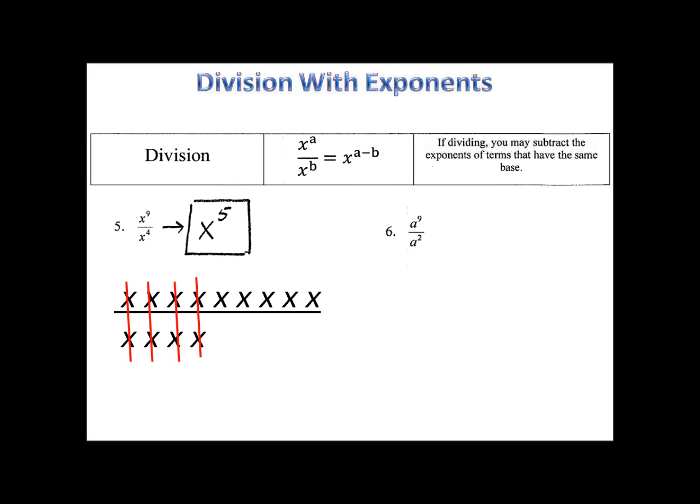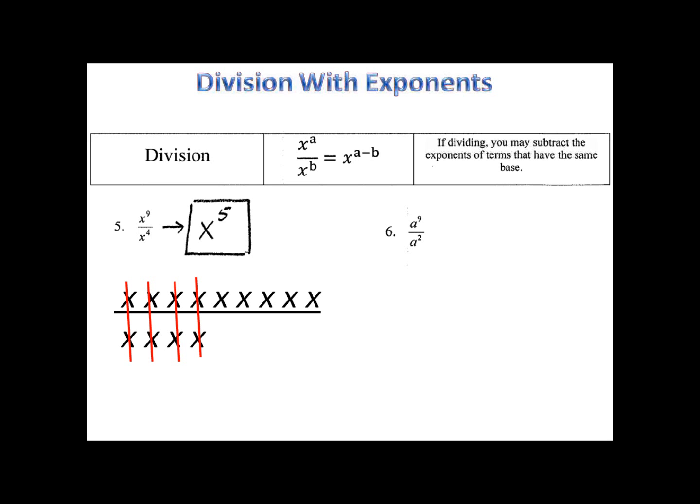Number 6 is for you to try. Please pause the video here. Let's see how you did. a to the ninth divided by a to the second. We subtract those exponents and we have a to the seventh.